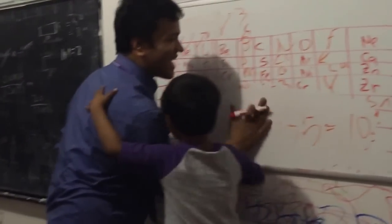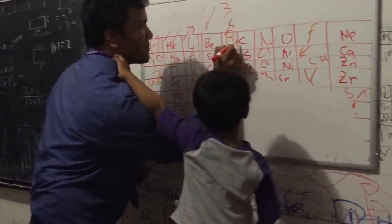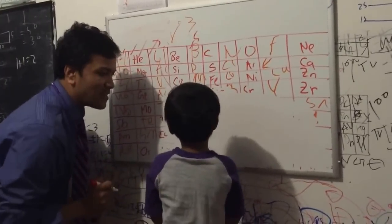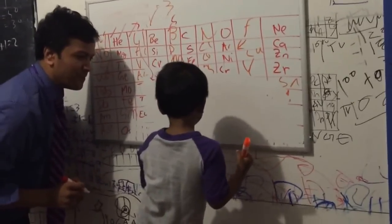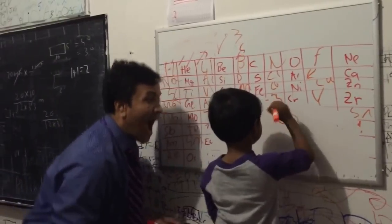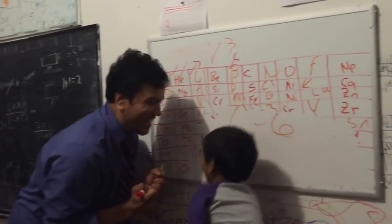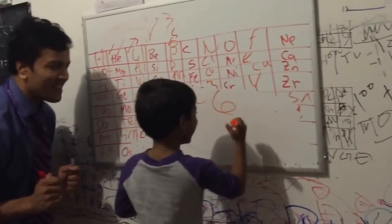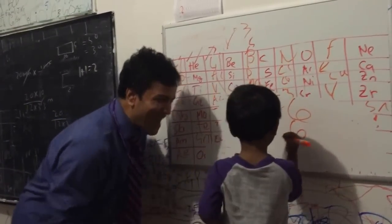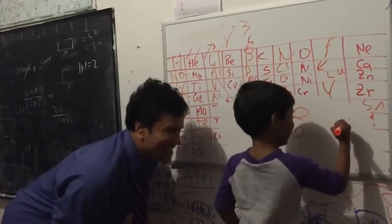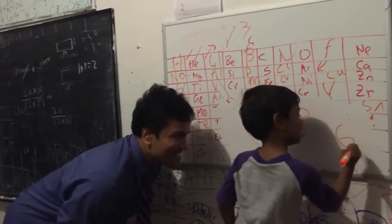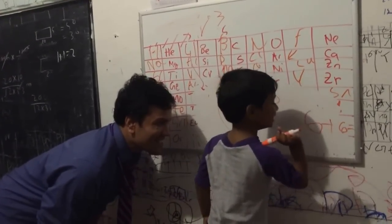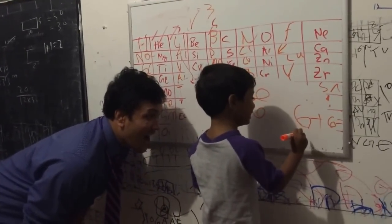What is the next element after boron? Carbon! Write down carbon. What is the atomic number for carbon? Six. How many protons in carbon? Six. What is the atomic mass for carbon? Six plus six equals ten.